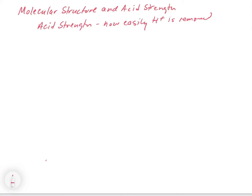In this video, we're going to look at the relationship between molecular structure and acid strength. In the previous video, we saw a chart with all these acids listed out from strongest to weakest. The question is why are strong acids strong and why are weak acids weak? In this video, we're going to look at what trends exist in the actual structure of molecules that might make a molecule a stronger acid versus a weaker acid.